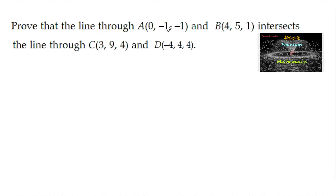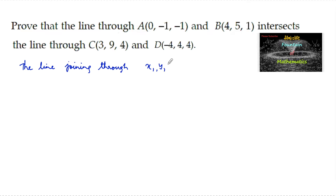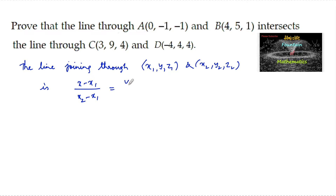Prove that the line through A and B intersects the line through C and D. We know that the equation of the line joining two points (x1, y1, z1) and (x2, y2, z2) is: (x - x1)/(x2 - x1) = (y - y1)/(y2 - y1) = (z - z1)/(z2 - z1).